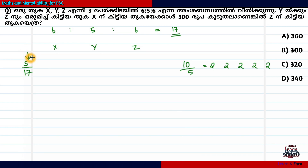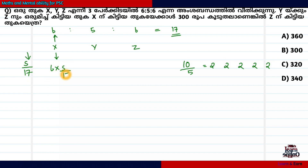That is S by 17. This is X, Y, Z. This is R. This is 6. If you have one of the 5s, this is 5s by 17. If you have one of the 5s, this is S by 70.